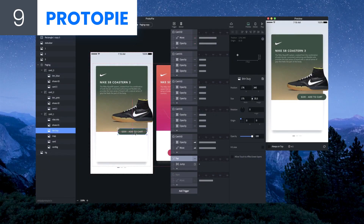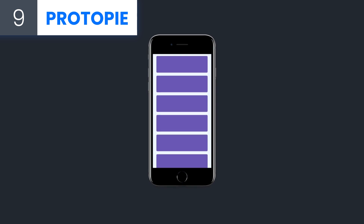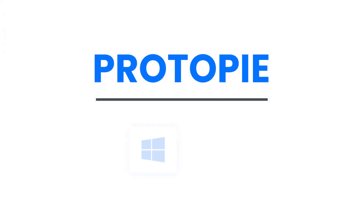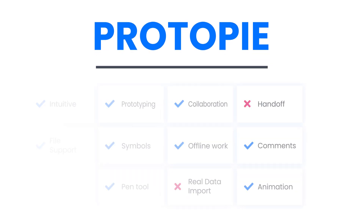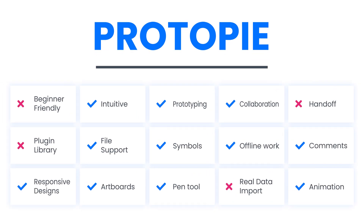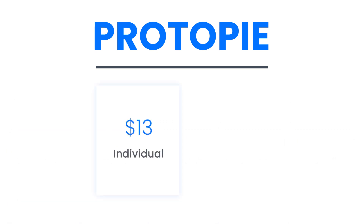Number 9: ProtoPie. ProtoPie is a great tool for prototyping apps. It supports many file formats and it's great for large, complicated projects. It works on Windows or Mac and features great file support, advanced animation and prototyping, with a wide range of interaction controls. On the downside, it doesn't have a plugin library, many learning materials, or handoff tools. The price is $13 for individuals and $50 for teams.